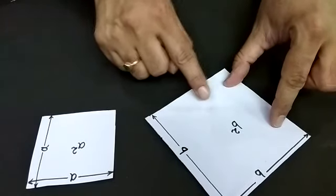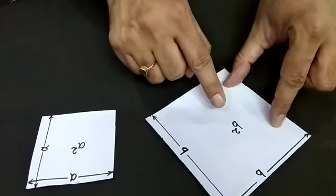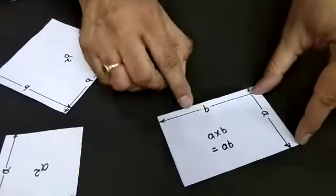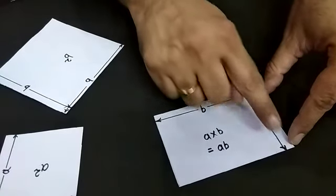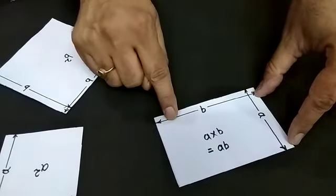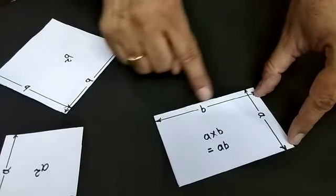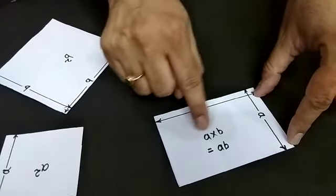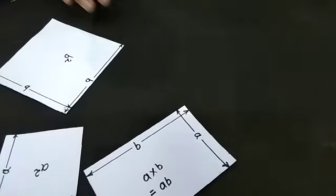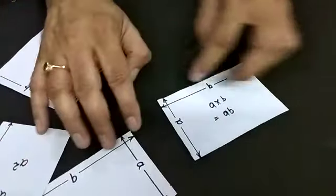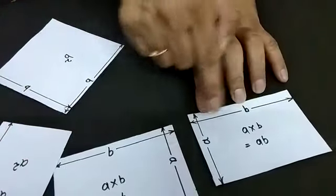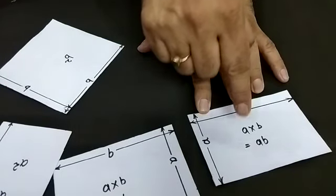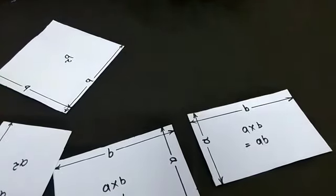The area of this square is b². We have a rectangle with sides a and b. The length of the rectangle is b and width is a, so the area is a×b. And we have another similar rectangle with area a×b.